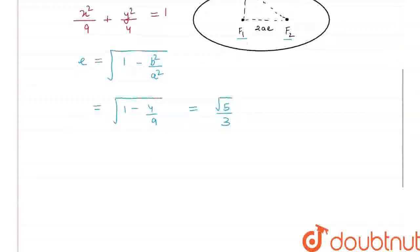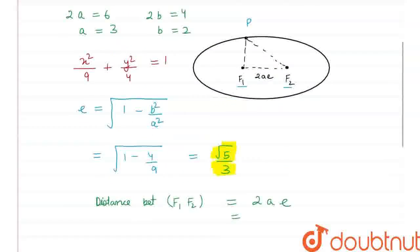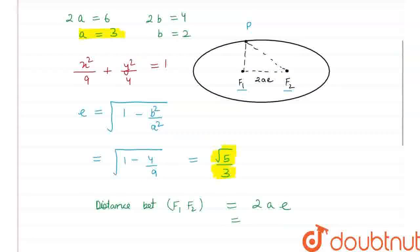Now, let's find the distance between the foci. The distance between the foci is equal to 2 times ae. Distance between f1 and f2 is equal to 2 times ae and here the value of my e is root 5 by 3 and my a is 3.